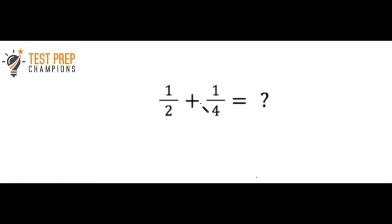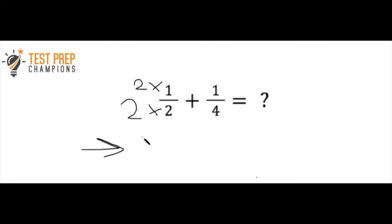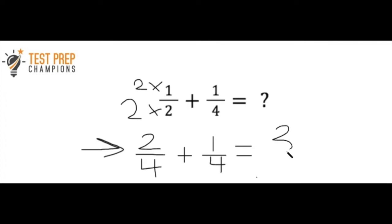When adding fractions, we look at the denominators. The first fraction has a two, and the second has a four — they're not the same. So before we can add, we need a common denominator. Two times two equals four, and whatever we multiply the denominator by, we do the same to the numerator. So we get two over four plus one over four. Now we have a common denominator, so we add two plus one, which is three. The answer is three-fourths.